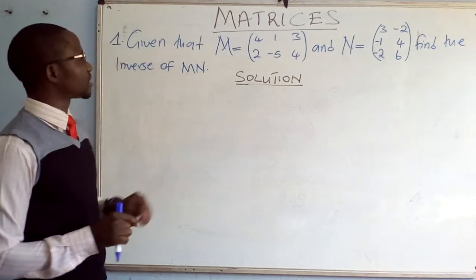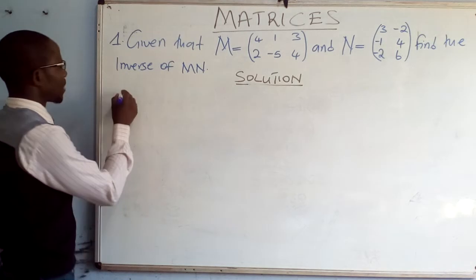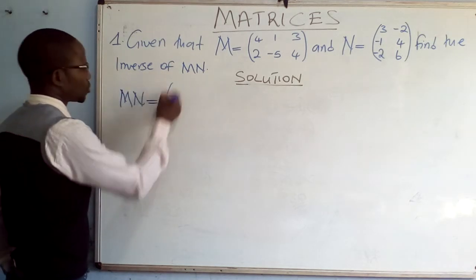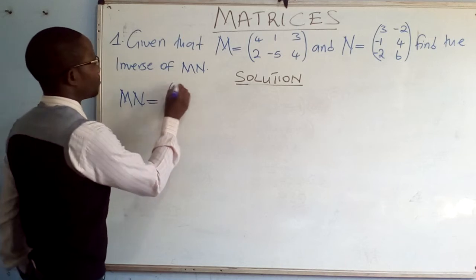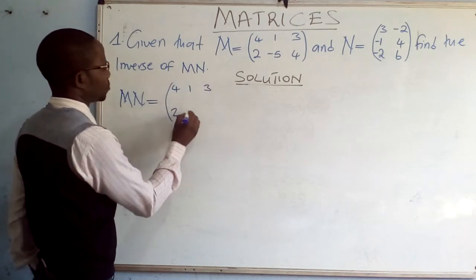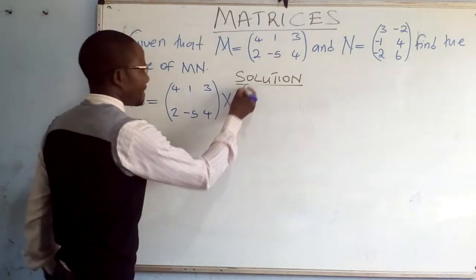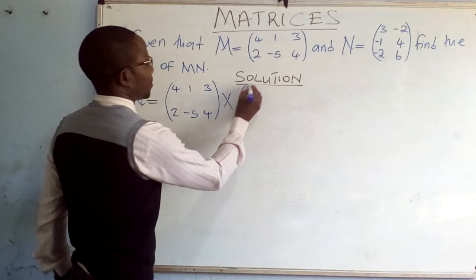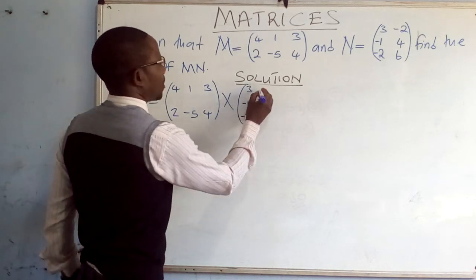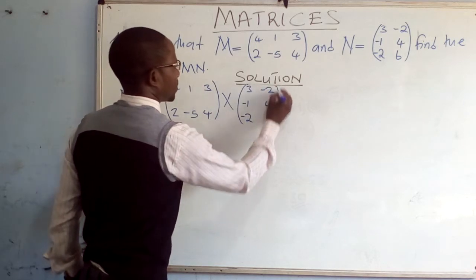So the first step is to actually find this product. MN is equal to matrix M: 4, 1, 3, 2, negative 5, 4. Times matrix N: 3, negative 1, negative 2, negative 2, 4, 6.